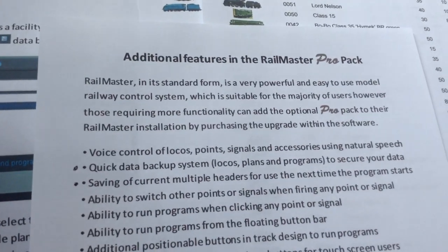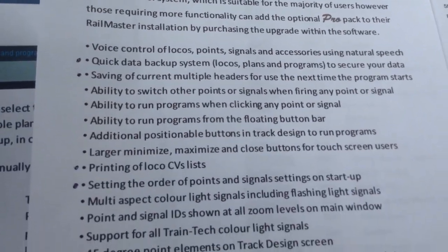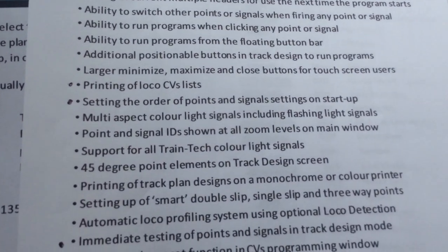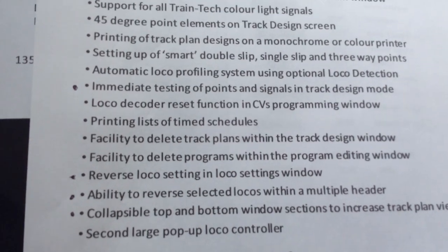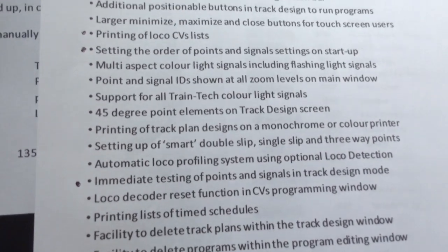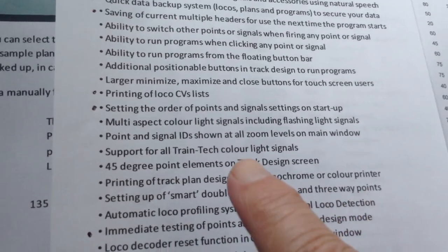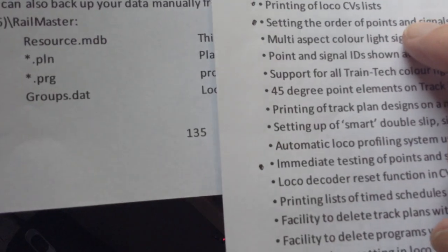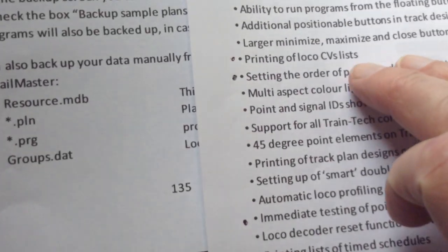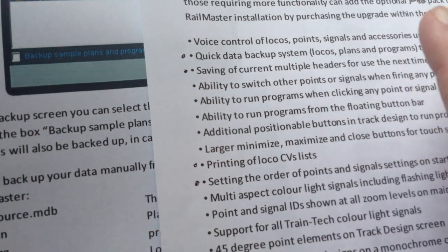One thing is this: if you go into your Railmaster guide and go to page six, these are all the original extra bits you get in the Pro. Just read down and have a look at them and you'll actually see some of the best things you can do. One of them is 45-degree points, which I have over there sitting on the track.